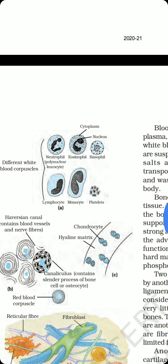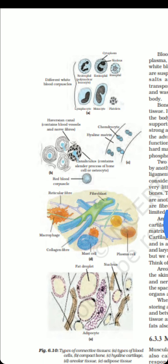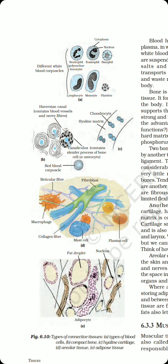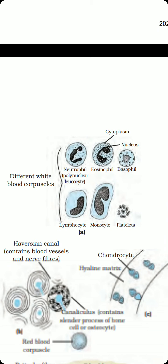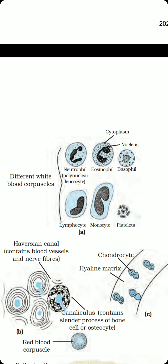In figure 6.10a, the types of blood cells are represented. You can see the different kinds of white blood corpuscles: neutrophils, eosinophils, basophils, lymphocytes, and monocytes. There are two kinds of WBCs — the granulocytes and the agranulocytes — that are being discussed here.